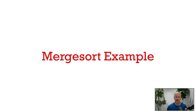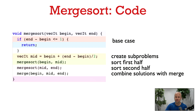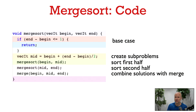In this video we're going to look at an example of merge sort in action. Here's the code for merge sort once again. First we check for the base case if the vector is of size 1 or empty. In the base case the vector is already sorted so we can just return.